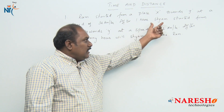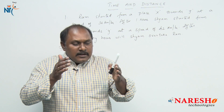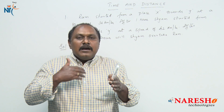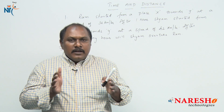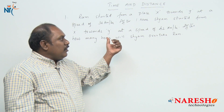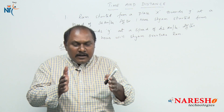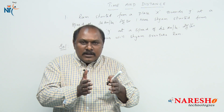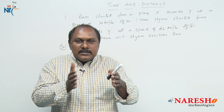We know that the speed of Shyam is 42 km per hour, so when Shyam starts, the distance between Ram and Shyam is 36 km. As every hour passes by, what happens to the distance between Ram and Shyam? Definitely it should decrease, because the speed of Shyam is more than Ram. In the next 1 hour, Ram travels 36 km but Shyam travels 42 km, so the distance between them decreases by 6 km.